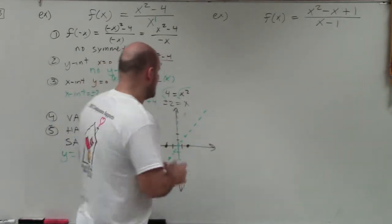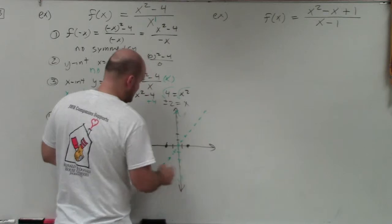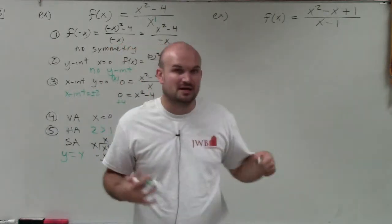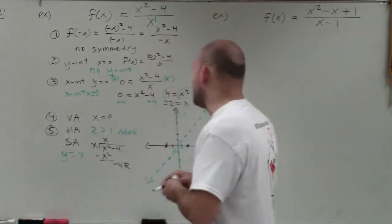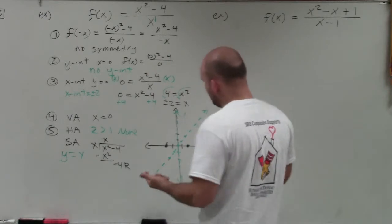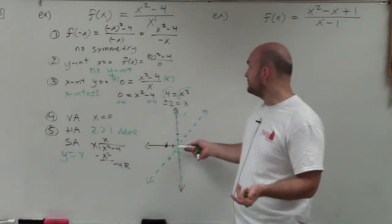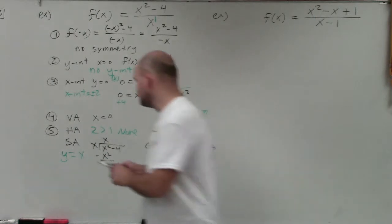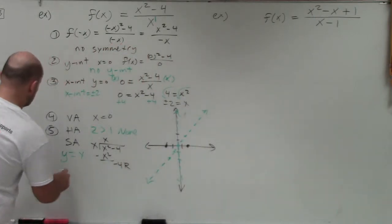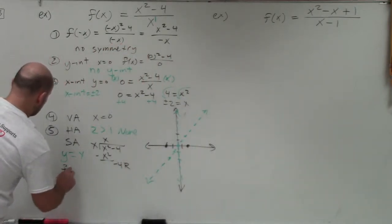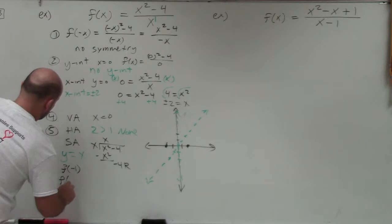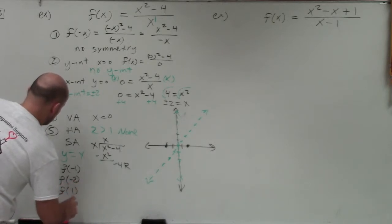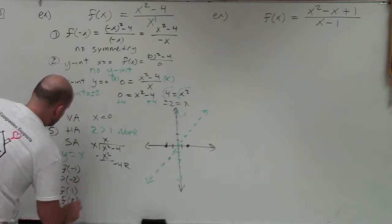Just like before, we want to determine two values to the left and to the right of our asymptote to determine the shape of the graph. The easiest choices are negative 1, negative 2, positive 1, positive 2. So I'll find f of negative 1, f of negative 2, f of positive 1, and f of positive 2.